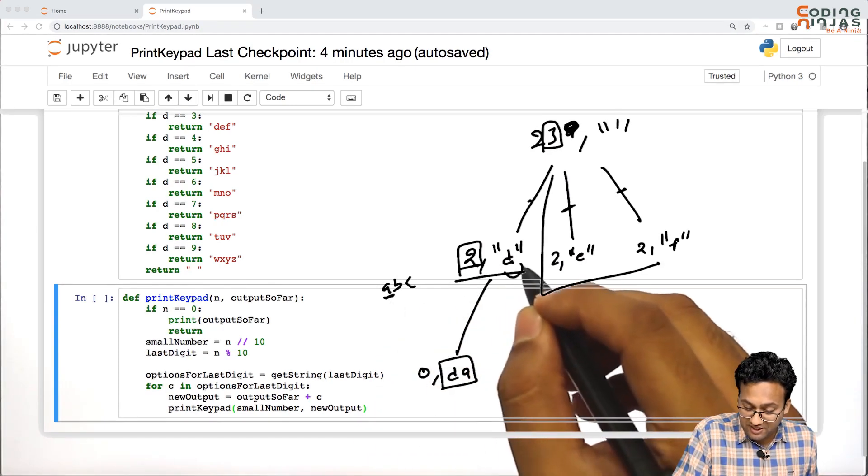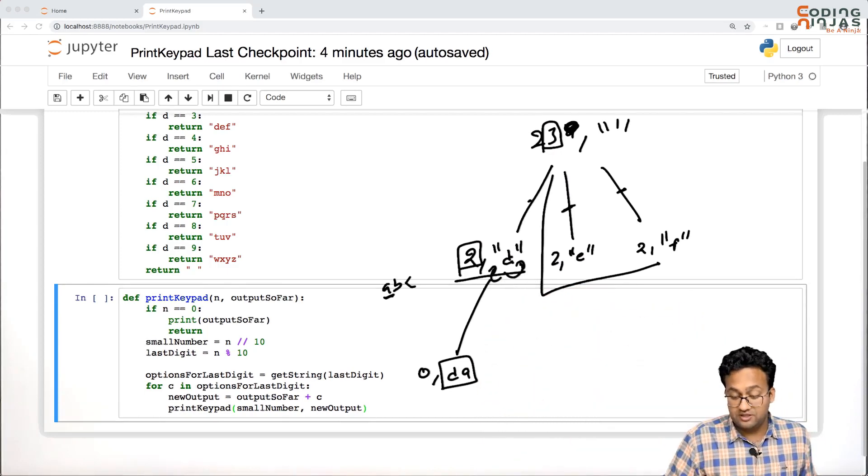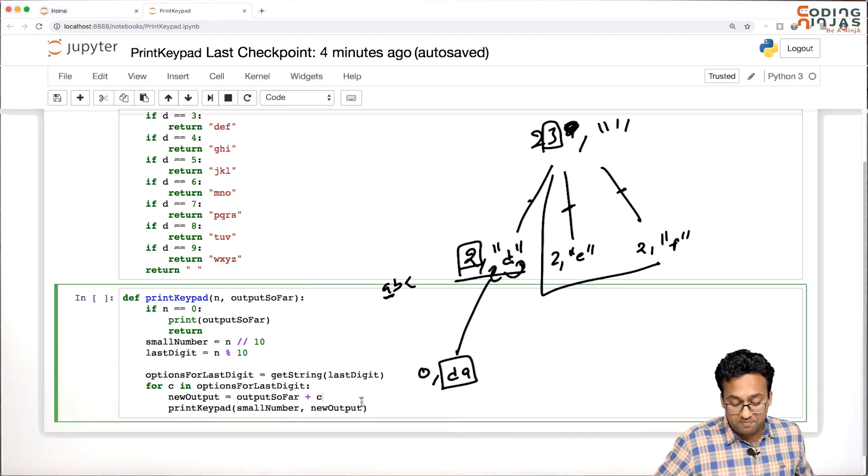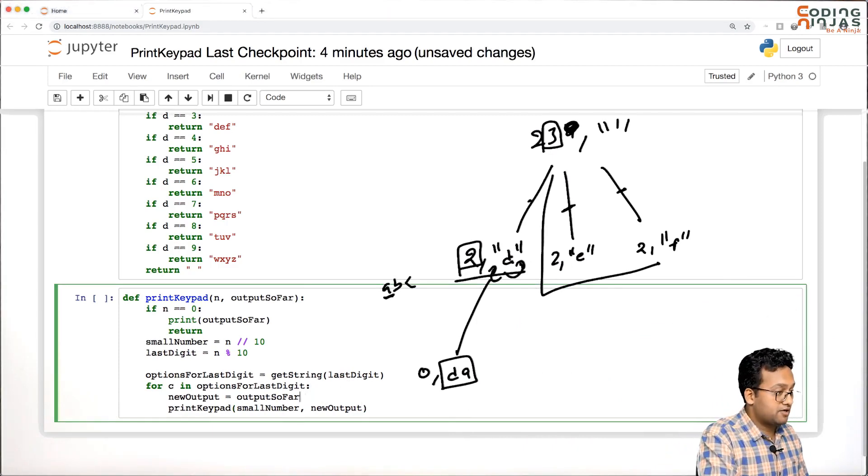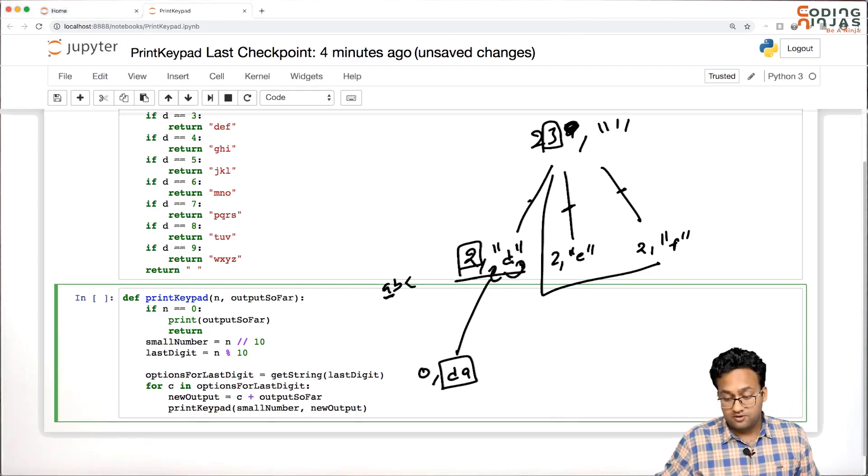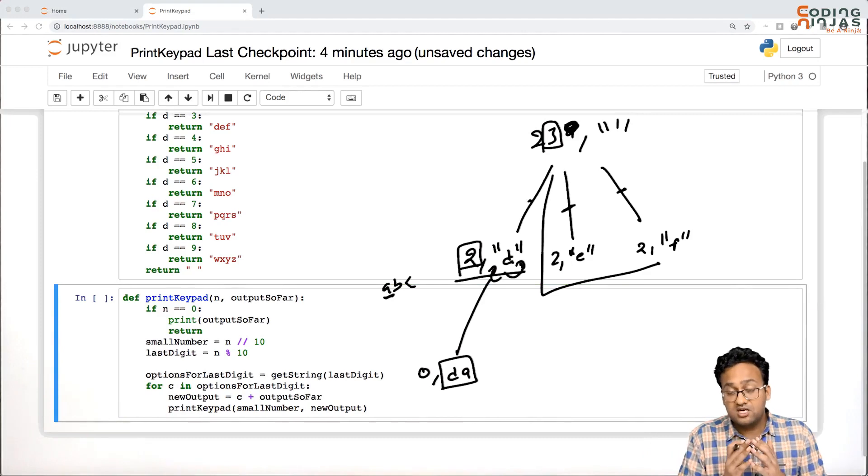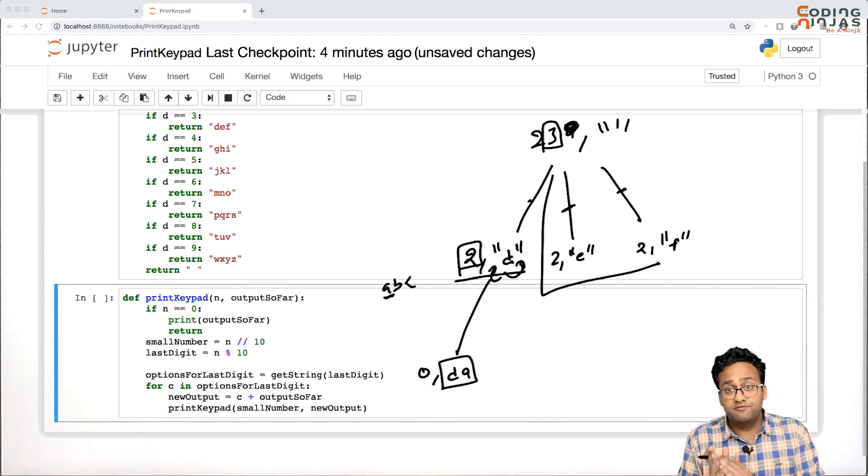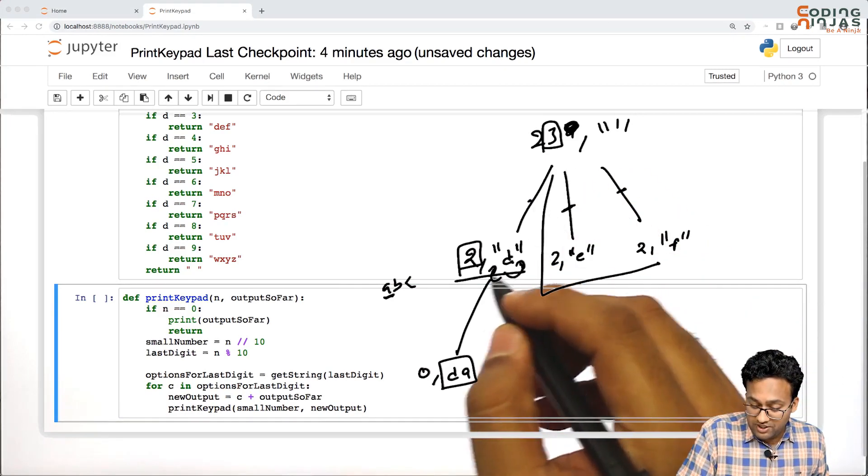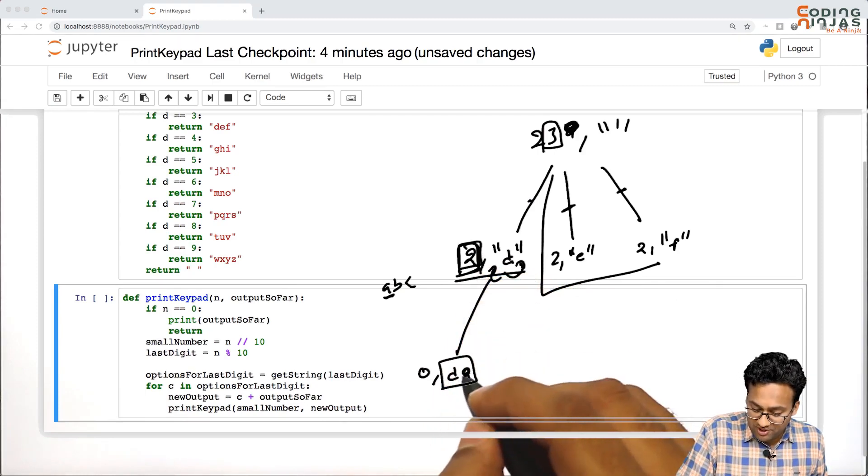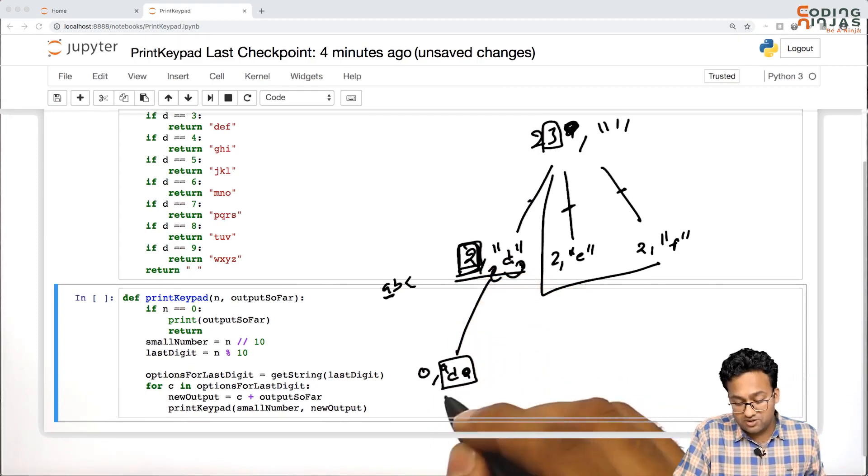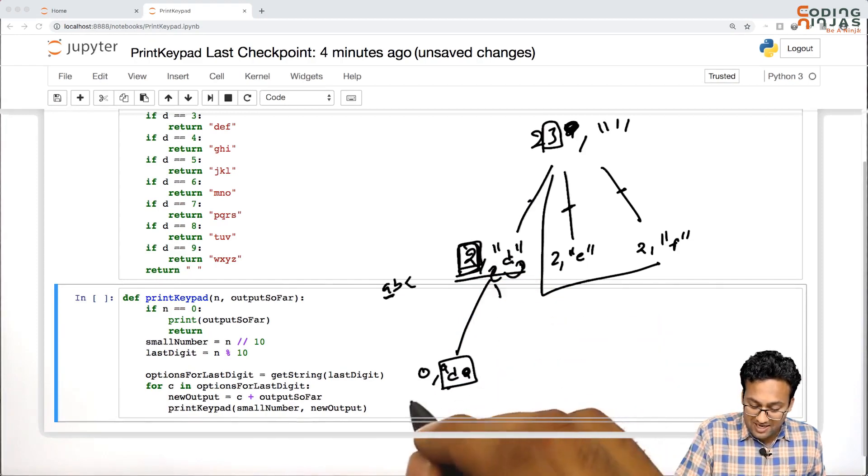You should not attach a after d, you should attach it before d. While we are doing the dry run, we just saw it should be c plus output so far. C has to be in front because we are taking digits from the end. Whatever is coming has to be appended to the front.